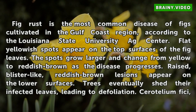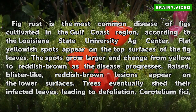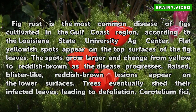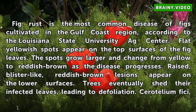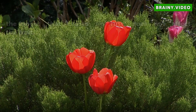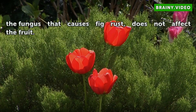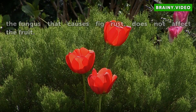Raised, blister-like, reddish-brown lesions appear on the lower surfaces. Trees eventually shed their infected leaves, leading to defoliation. Ceratelium fischi, the fungus that causes fig rust, does not affect the fruit.